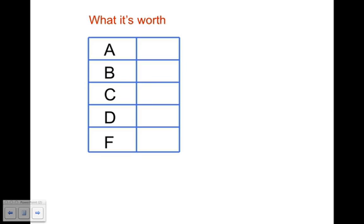When we talk about grade point average, the point part is what each grade is worth. An A is worth 4, a B is worth 3, a C is worth 2, D's are worth 1 point, and F's are worth 0 points.